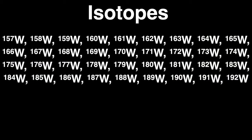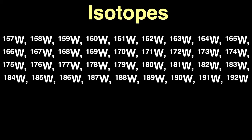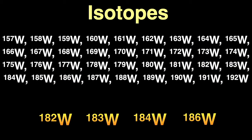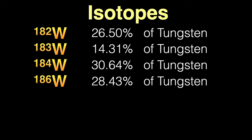Each element has many different forms. For each specific element, the number of protons in the nucleus is the same — 74 protons for tungsten — but there can be different numbers of neutrons in the nucleus. All these different forms are called isotopes. They're chemically identical to each other, but with slightly different weights. The number you see next to the chemical symbol is the total number of protons and neutrons in the nucleus. There are 36 isotopes of tungsten, and of these, there are four stable, non-radioactive isotopes found in different proportions in nature, from a little more than 14% to over 30%.